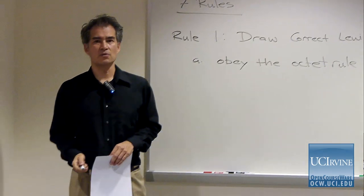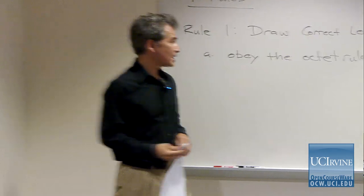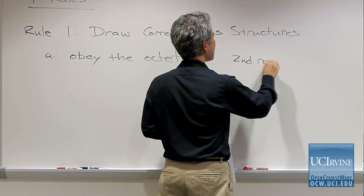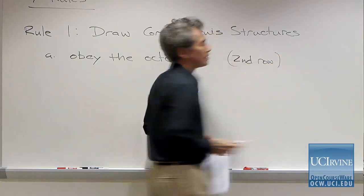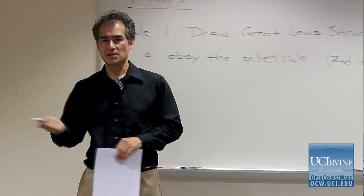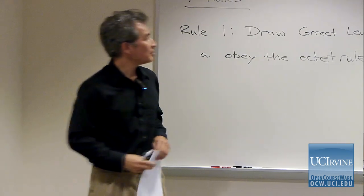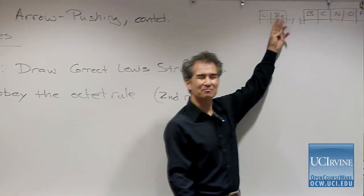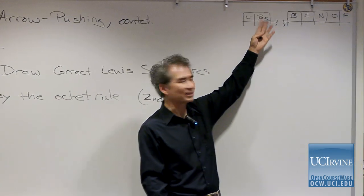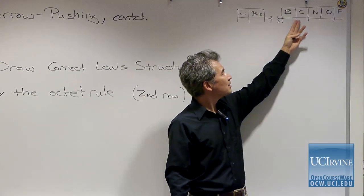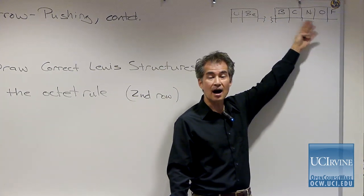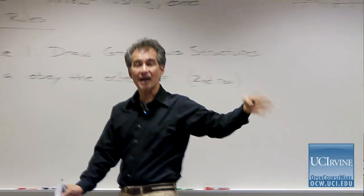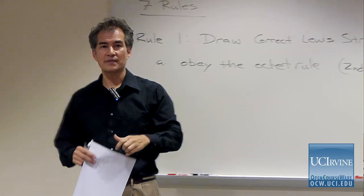The octet rule says that for second row atoms — not hydrogen, not transition metals, not sulfur, not phosphorus — but lithium, boron, carbon, nitrogen, oxygen, and fluorine: for these second row atoms, we cannot have more than eight electrons on that structure.